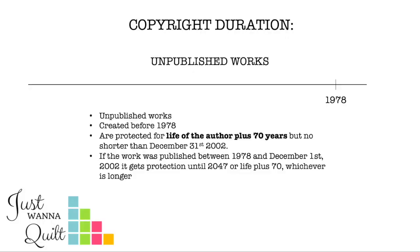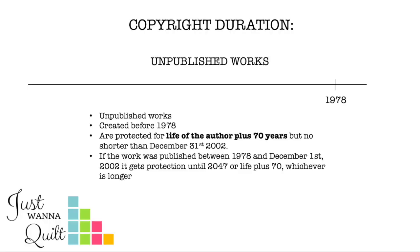Welcome back to part seven. We're going to talk about unpublished works. There's a strange split: works first created before 1978 but not published — like your grandmother's quilt kept in an attic and never seen — are protected for the life of the author plus 70 years, but no shorter than December 31st, 2002. That means Abigail Adams' diaries that were never published were protected through 2002 even if she died more than 70 years ago. But if the work was published between 1978 and 2002, it got protection through 2047, or life plus 70, whichever is longer.